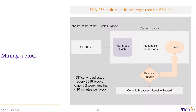That mining process takes a hash of the prior block, combines it with the thousands of transactions being committed in the current block, and adds something called the nonce — a guess, like a little seed or kernel that's part of the cryptographic hash problem. Each miner guesses at a number — it's like a lottery ticket.